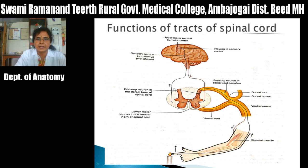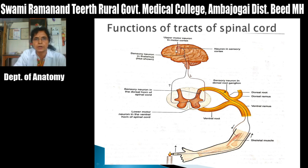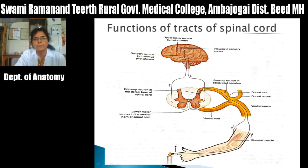From this example we understand that ascending fibers carry sensory information, so ascending tracts of the spinal cord are sensory in function and are also called sensory pathways. The decision taken in the cerebral cortex is sent as nerve impulses through descending fibers to the spinal cord, forming the descending tracts. These descending tracts are motor in function and are also called motor pathways. Thus ascending tracts are sensory pathways and descending tracts are motor pathways.